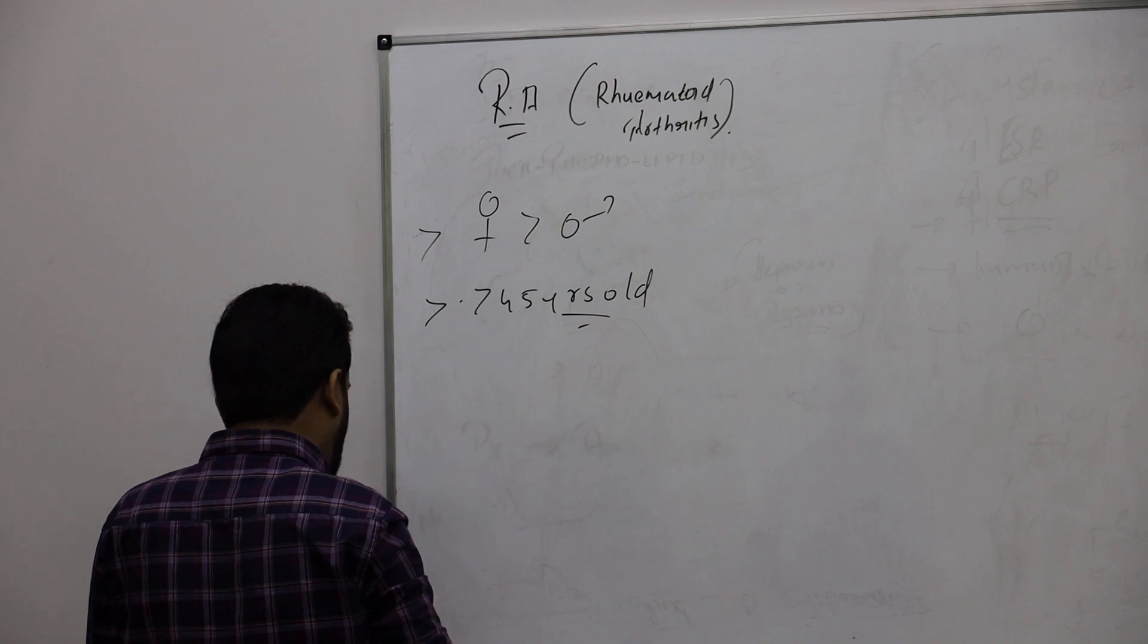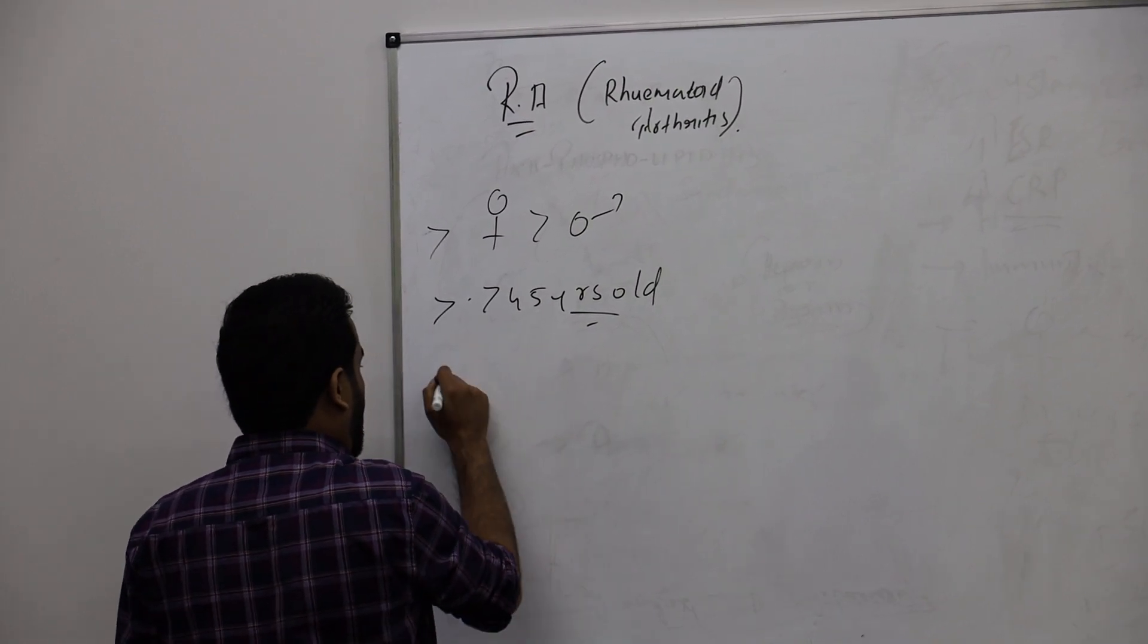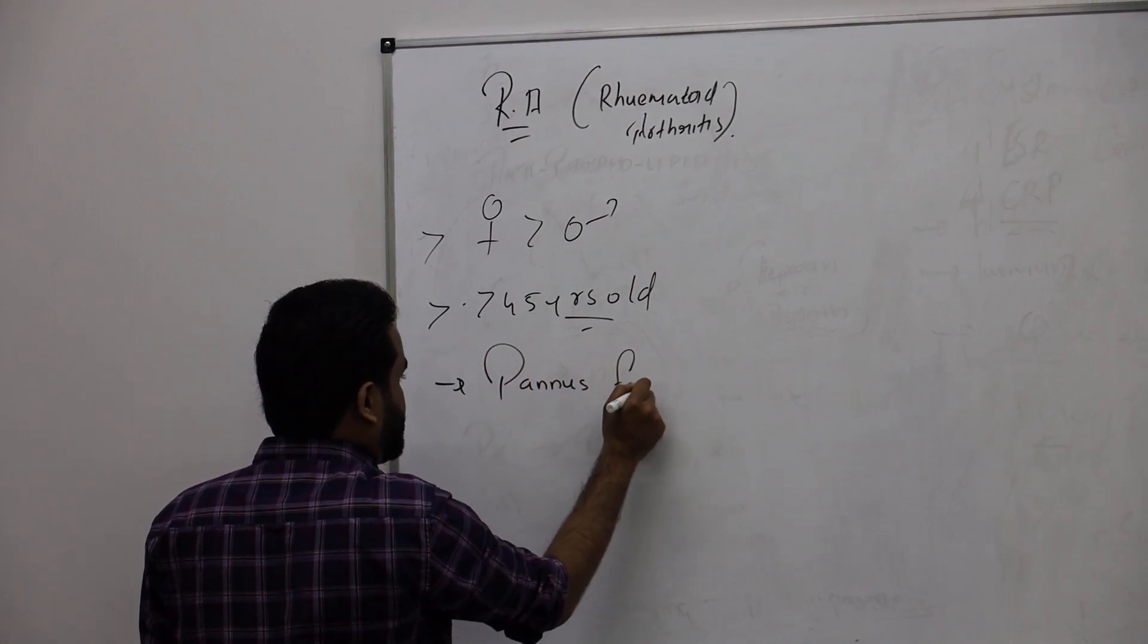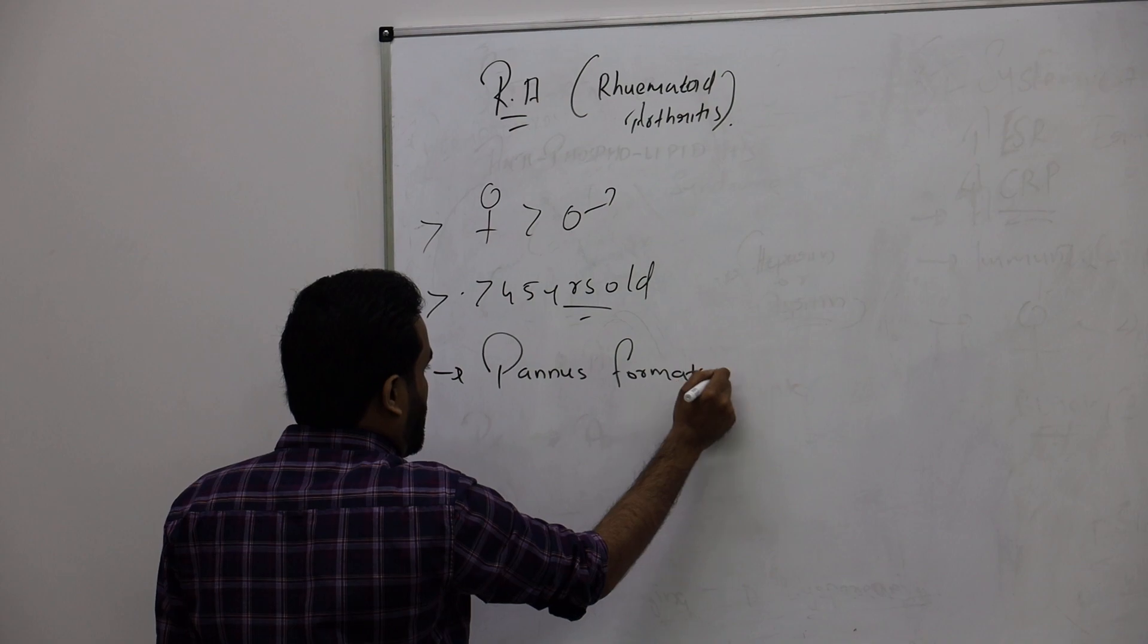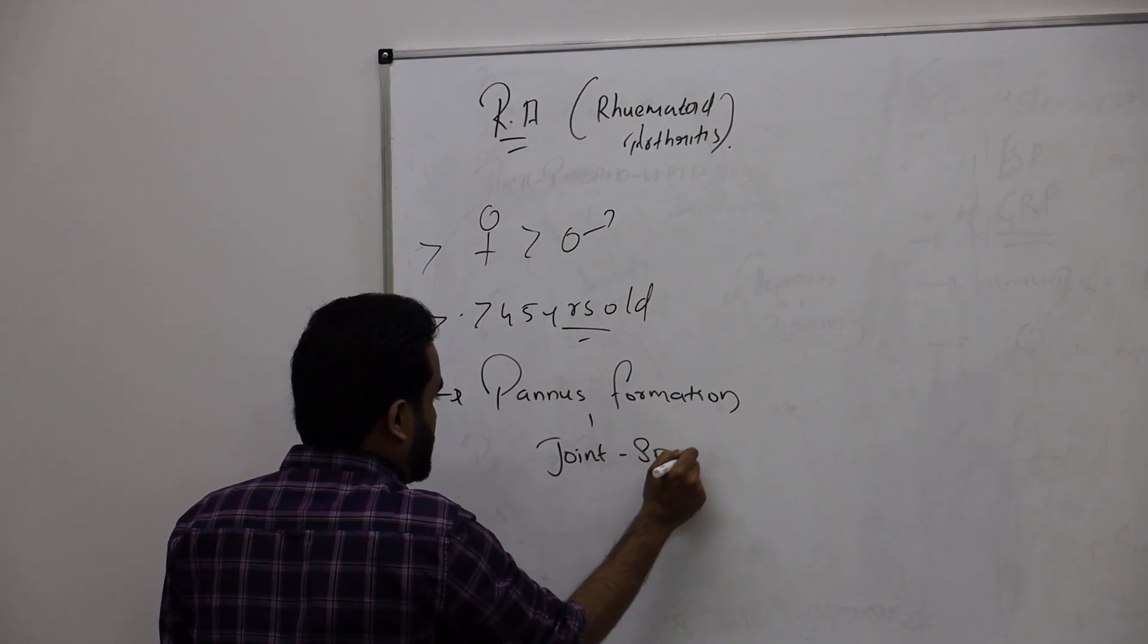The main thing you're going to see is panus formation in the joint, panus formation, or joint space narrowing.